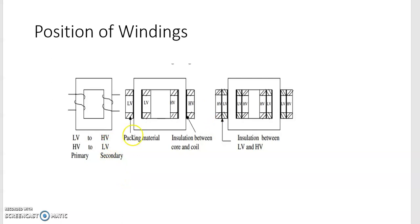As also discussed in module 1, the position of the windings with respect to its core is important. Unless otherwise specified, the low voltage winding is always placed next to the core and the high voltage winding over the low voltage winding, in order to reduce the quantity of insulation used and avoid the possibility of breakdown in the space between the core and the high voltage coil. In some cases, the high voltage coil is placed next to the core.